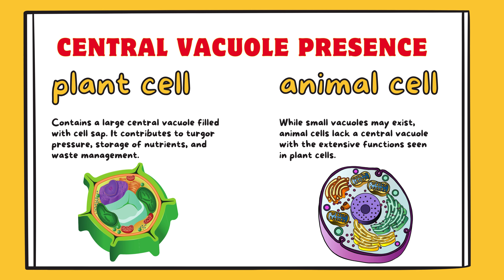Central vacuole presence. Plant cell contains a large central vacuole filled with cell sap. It contributes to turgor pressure, storage of nutrients, and waste management. Animal cell: while small vacuoles may exist, animal cells lack a central vacuole with the extensive functions seen in plant cells.